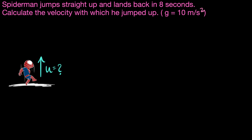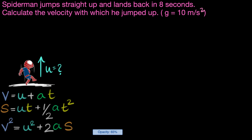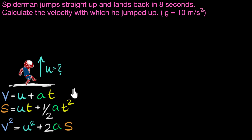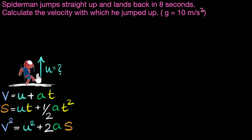How do we do this? Because objects in free fall always have a constant acceleration, we can go ahead and use the three equations of motion to solve what we want. We've solved problems like this before, but the difference here is that Spider-Man goes both up and comes back down, and the total time is given to us.